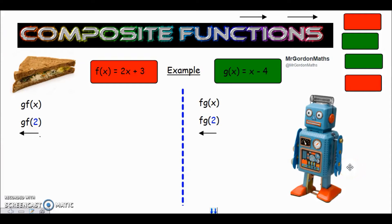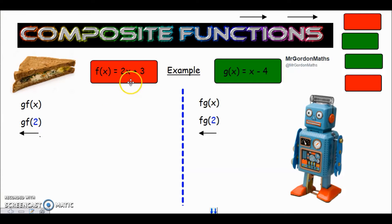Hi guys, welcome to another Chama Valley Maths tutorial. Mr Gordon here. We're looking at the second part of our functions playlist: composite functions. You may remember the word composite from composite shapes, where we join two shapes together. Similarly, we're going to be looking at more than one function at a time. The f of x is our first function and that is 2x plus 3. Our second function g of x is x minus 4.